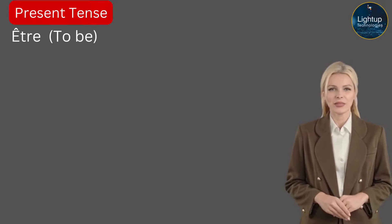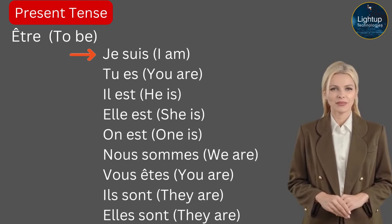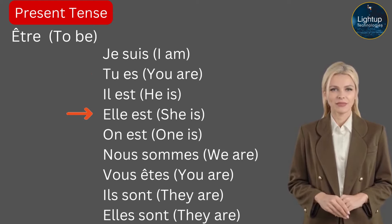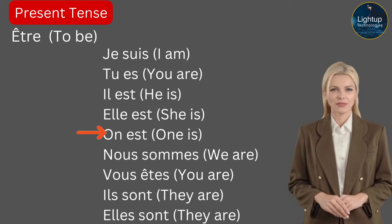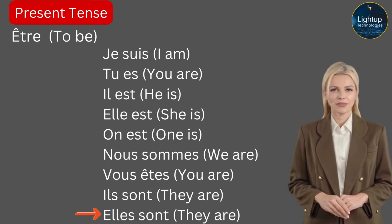Être must also sometimes be used in the passé composé. Je suis (I am), tu es (you are), il est (he is), elle est (she is), on est (one is), nous sommes (we are), vous êtes (you are), ils sont (they are), elles sont (they are).